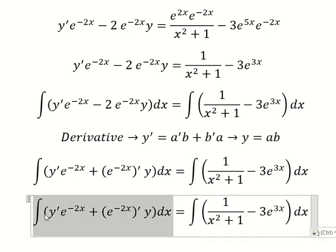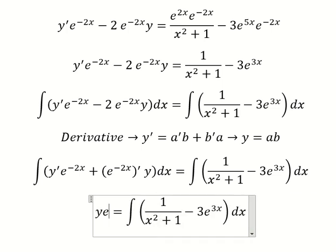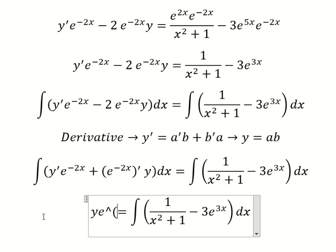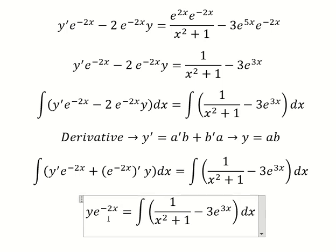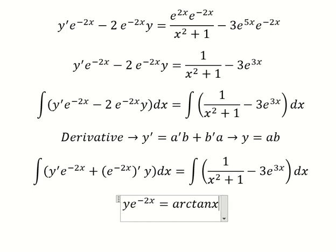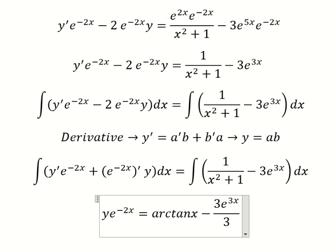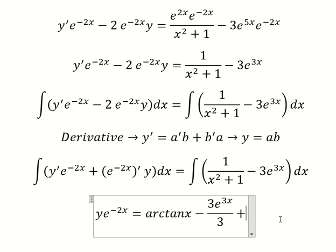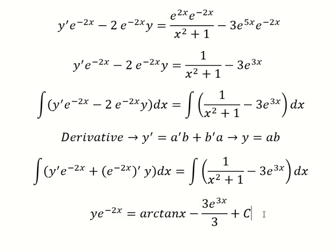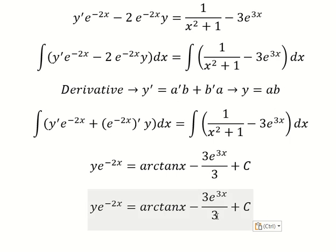So the integration of this one gives y equals e to the power of negative two s. The integration of this one we have arctan(s). This one we have e to the power of three s over three, and I will add the constant C. Later we simplify by dividing by three.